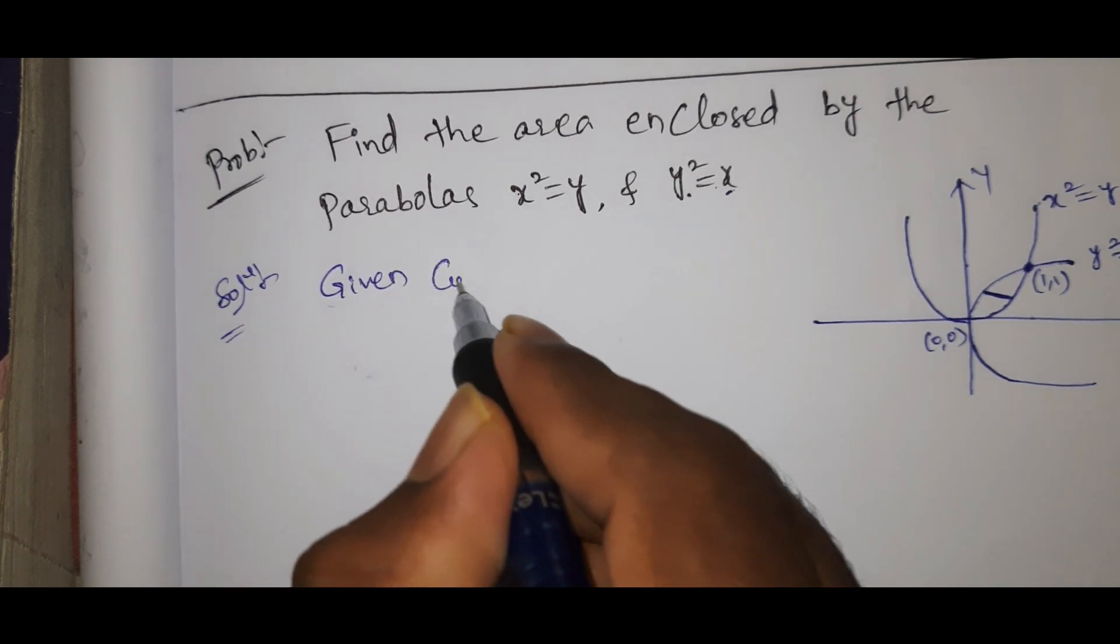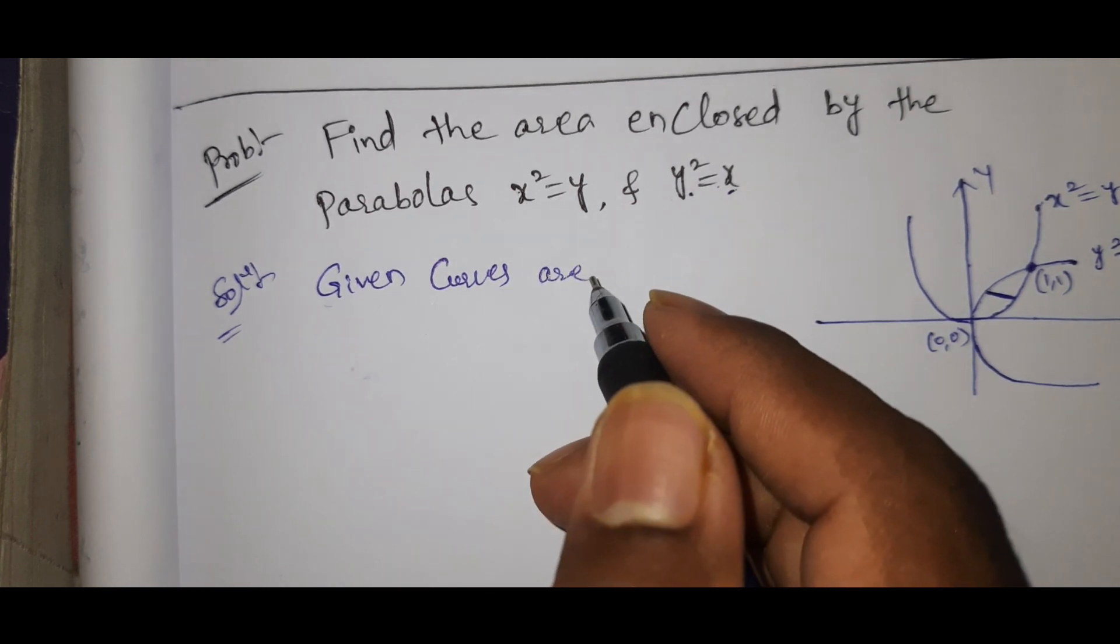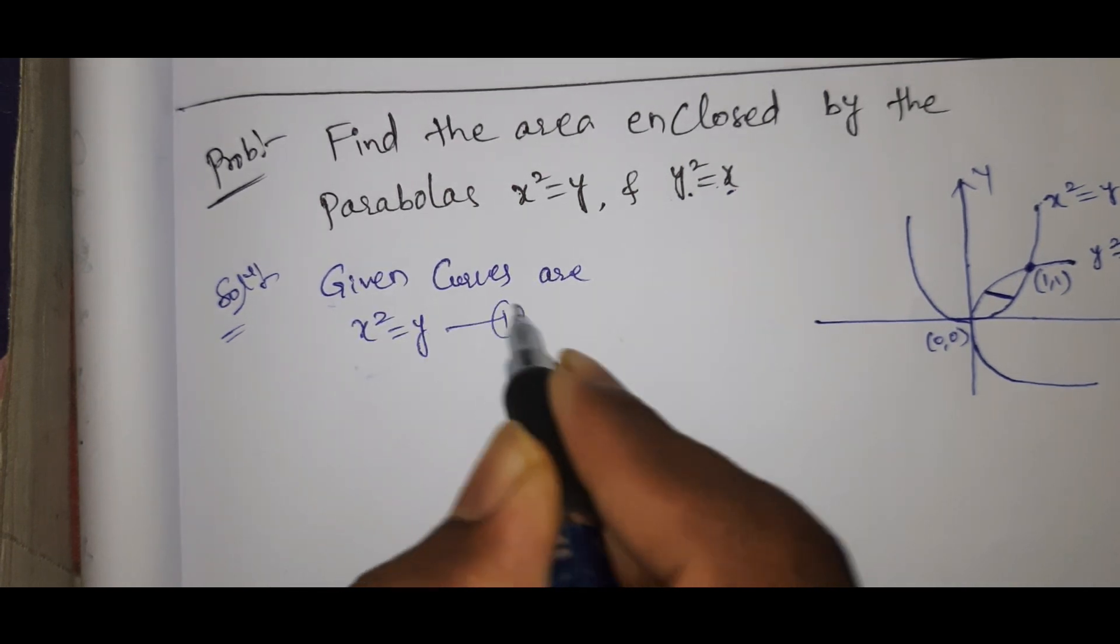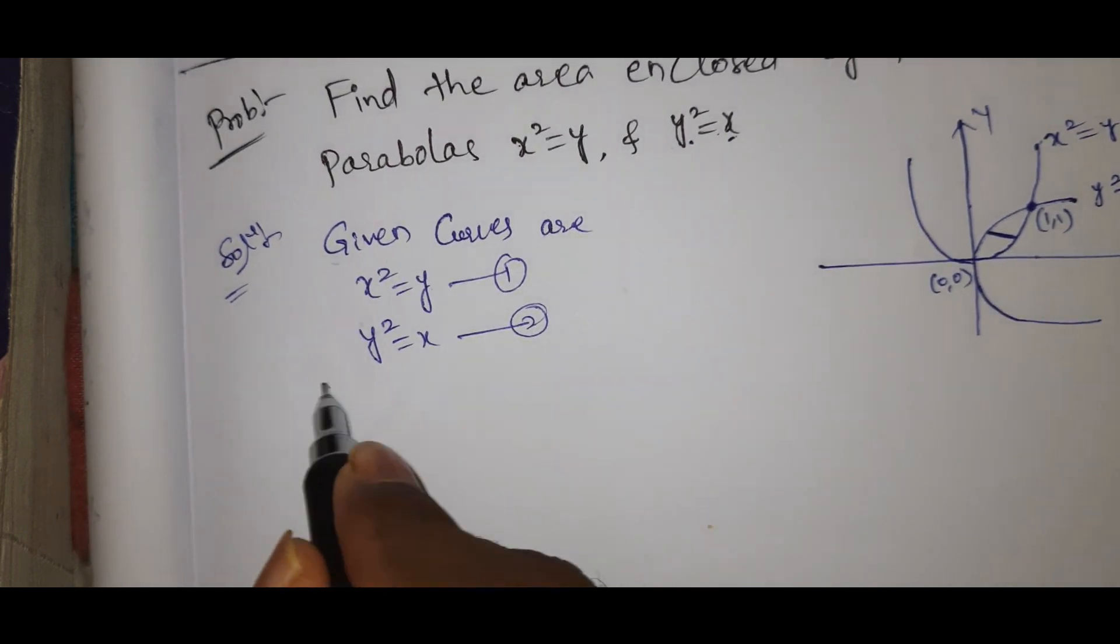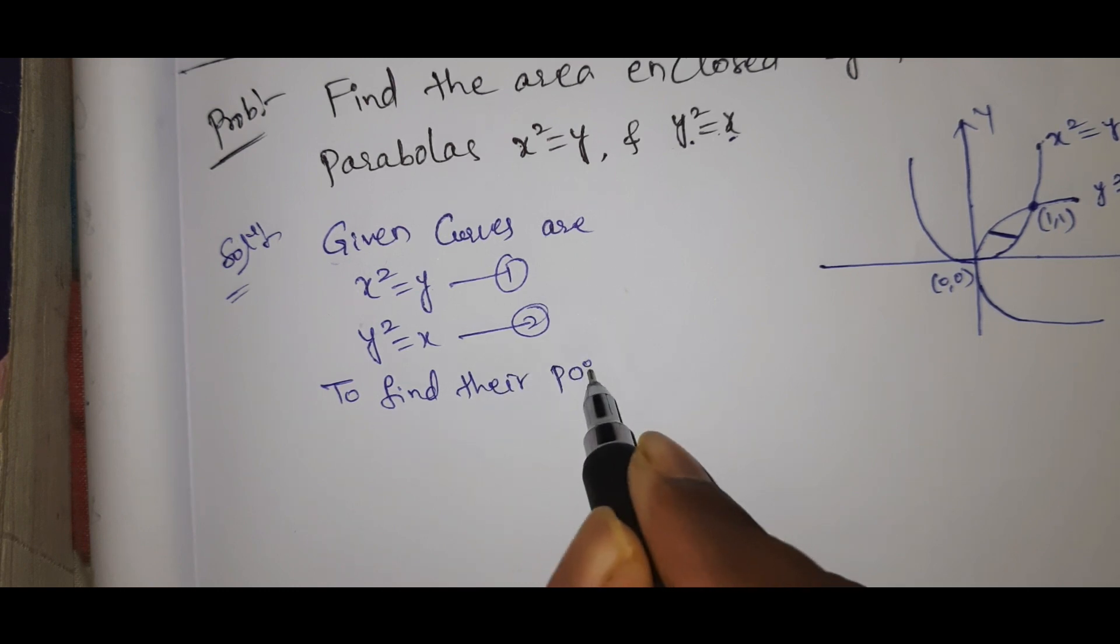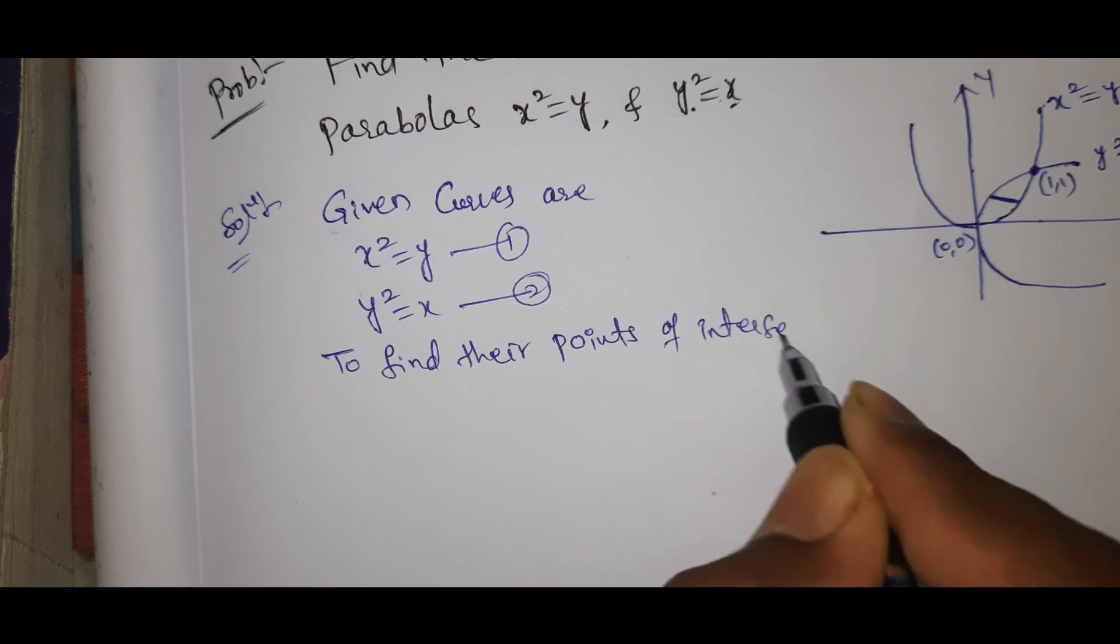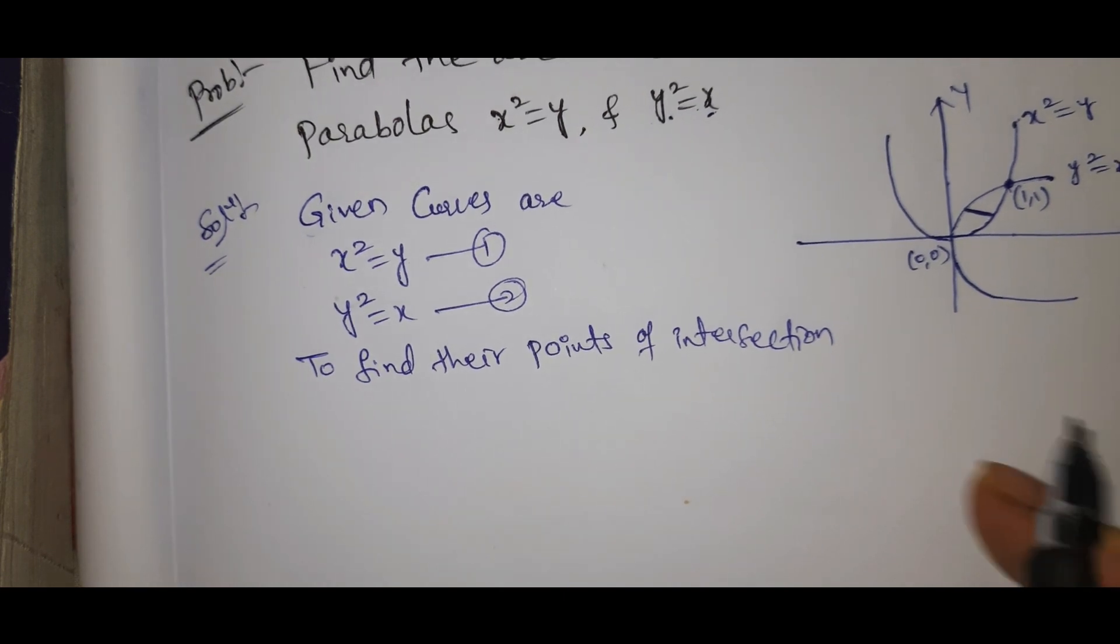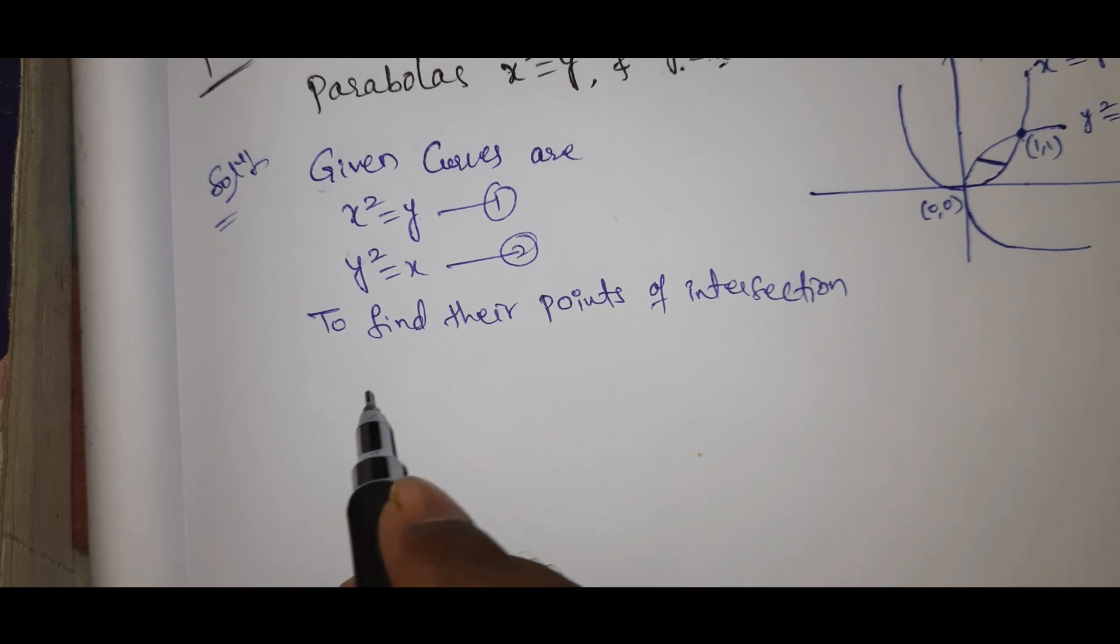Given curves are x² = y (equation 1) and y² = x (equation 2). To find their points of intersection.